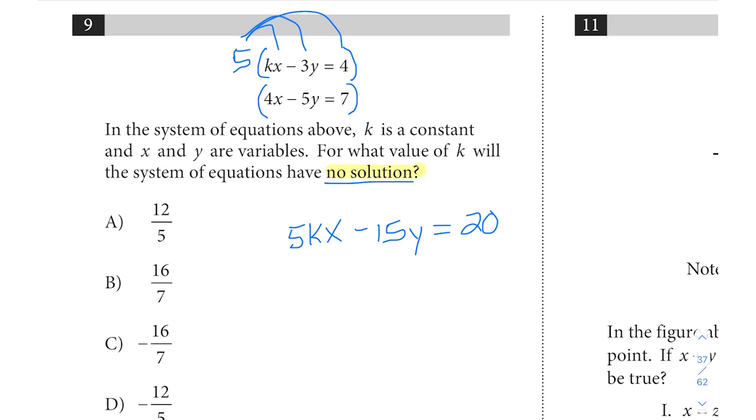Then here for this bottom equation I want it to cancel out with a negative 15y, so I'd like to get this to a positive 15y and we can do that by multiplying this bottom equation by negative 3. So when we do that we will get negative 12x plus 15y equals negative 21. And when we combine these equations the y's will cancel.